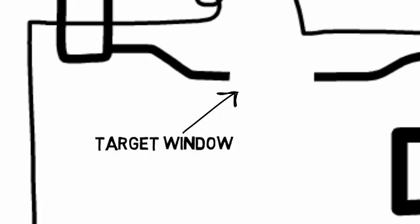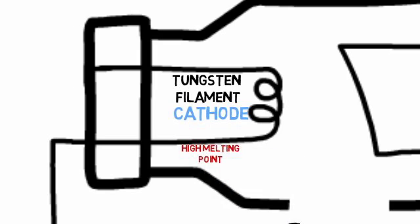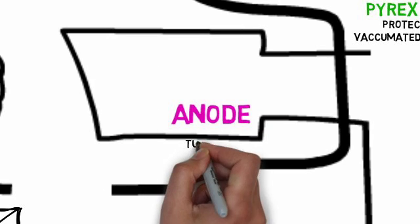The glass has a target window which is a thinning of the glass. The cathode is made up of tungsten filament and has high melting point. The anode is also made up of tungsten.